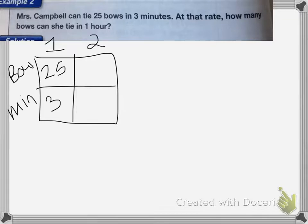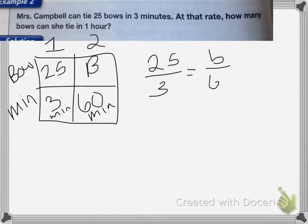For the second case, I want to know how many bows in an hour. I'll change an hour into 60 minutes so I have the same label. Setting up the proportion: 25 over 3 equals B over 60. Cross multiply to get 3B equals 25 times 60.